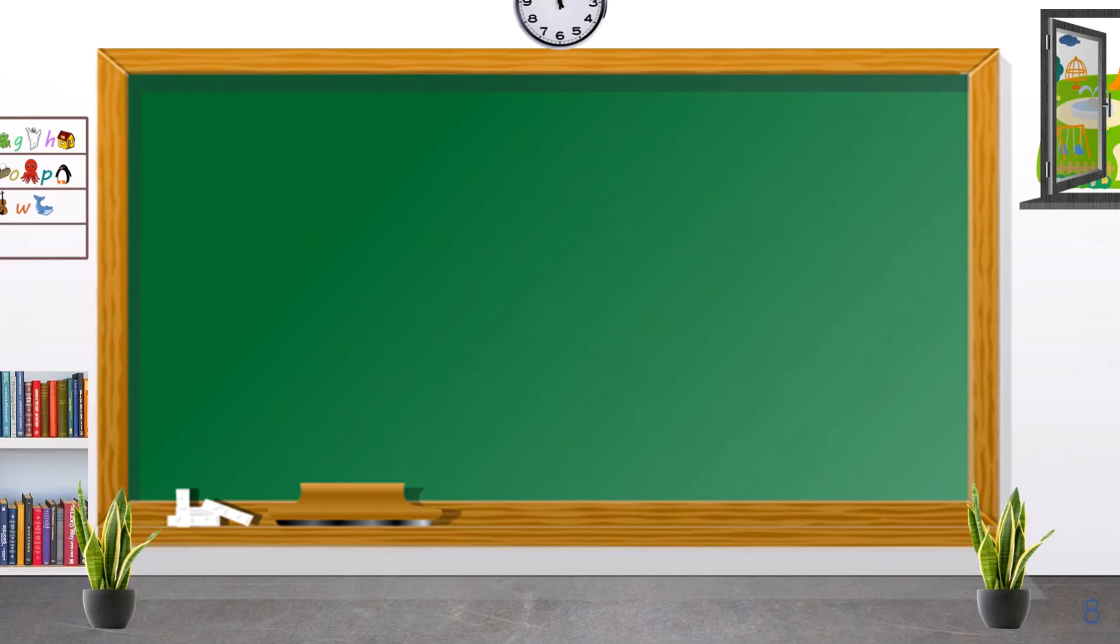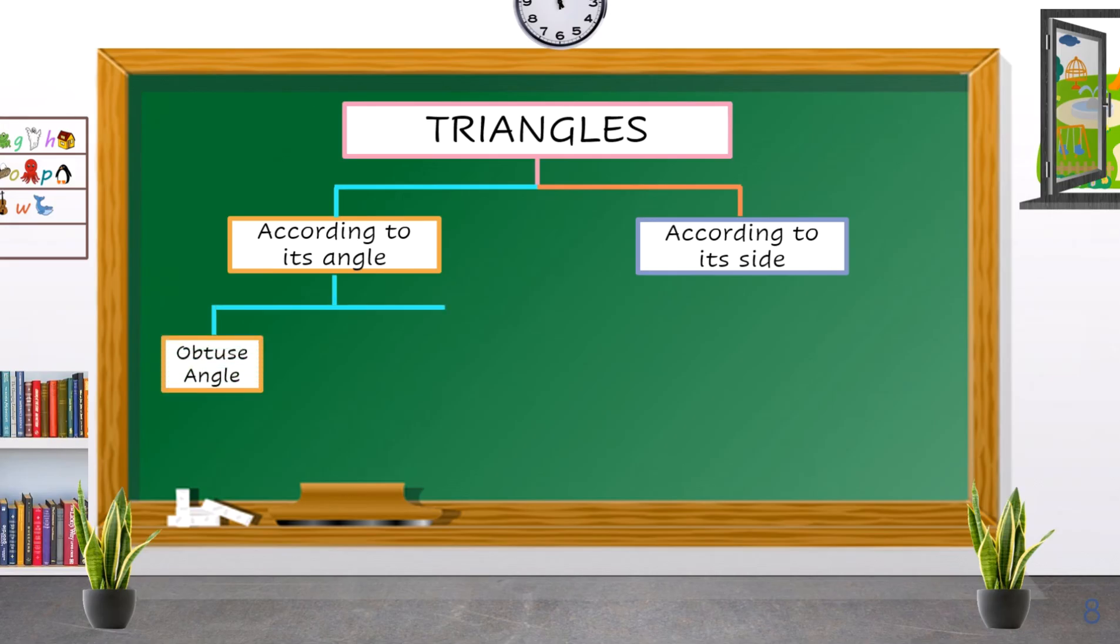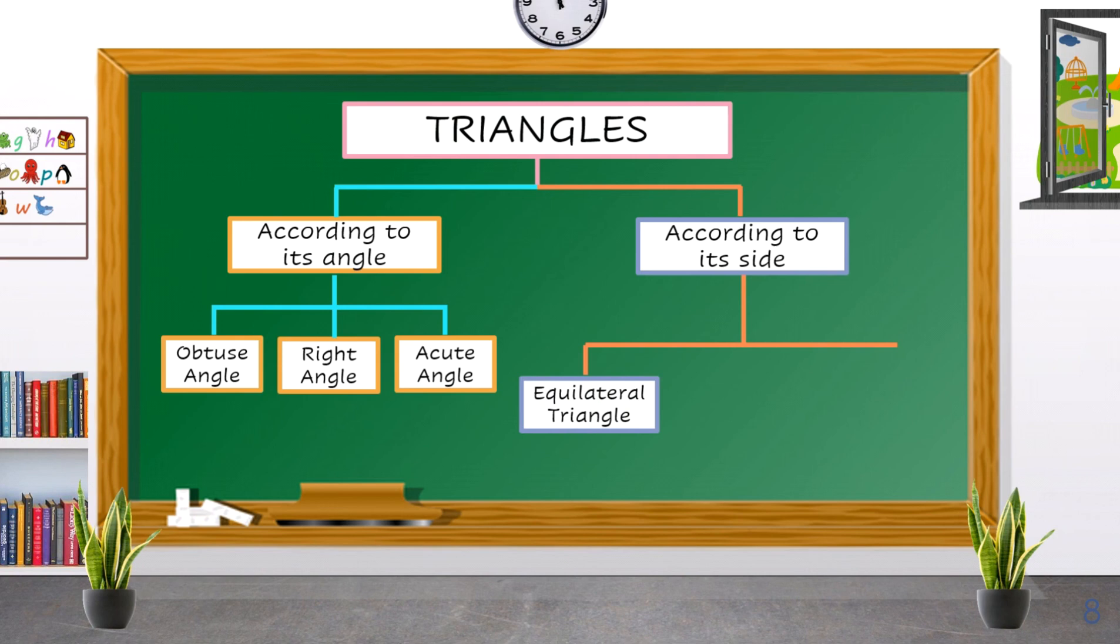To summarize our lesson, triangles can be classified according to angles and according to sides. Triangles according to angles are obtuse angle, right angle, and acute angle. Triangles according to sides are equilateral triangle, isosceles triangle, and scalene triangle.